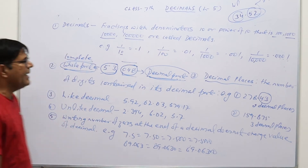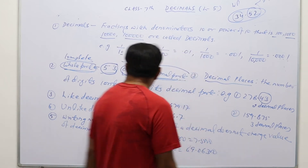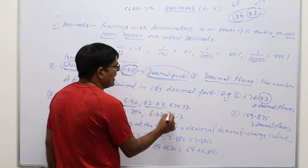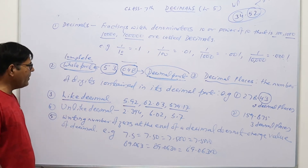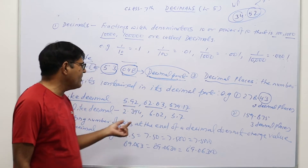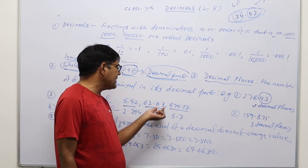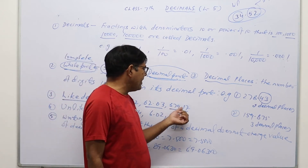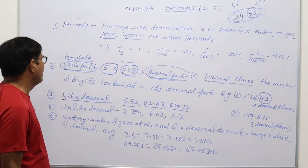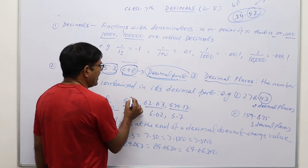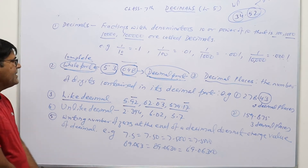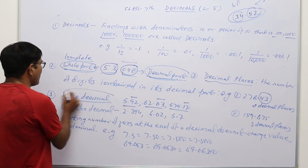Now, next, what do you understand by like decimals? Like decimals means if some decimals are given and in the given decimal numbers the number of digits in the decimal part are equal — for example, 5.92 has decimal part 92 so the number of digits are two, and similarly another number also has two decimal places — so if the number of decimal places in the given decimal numbers are equal, then such decimals are known as like decimals.